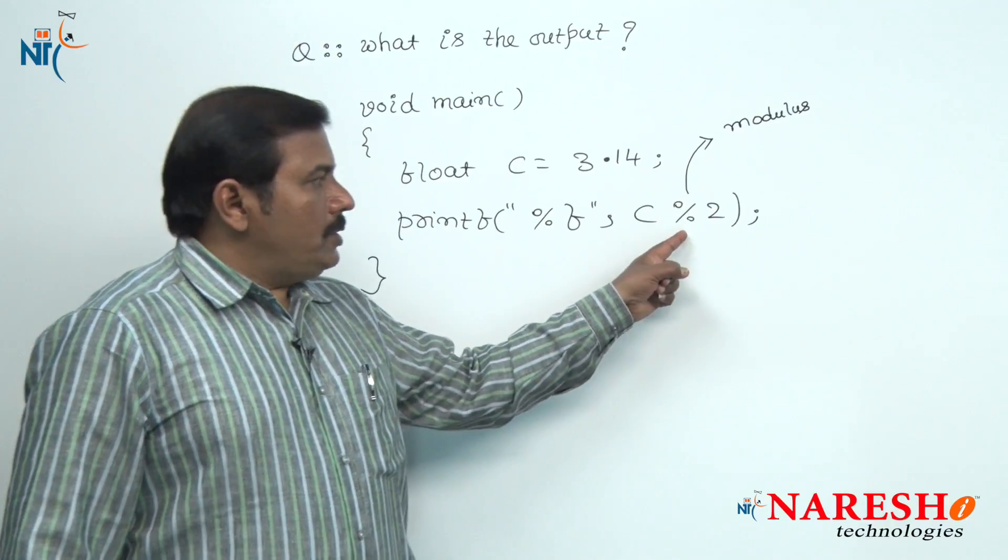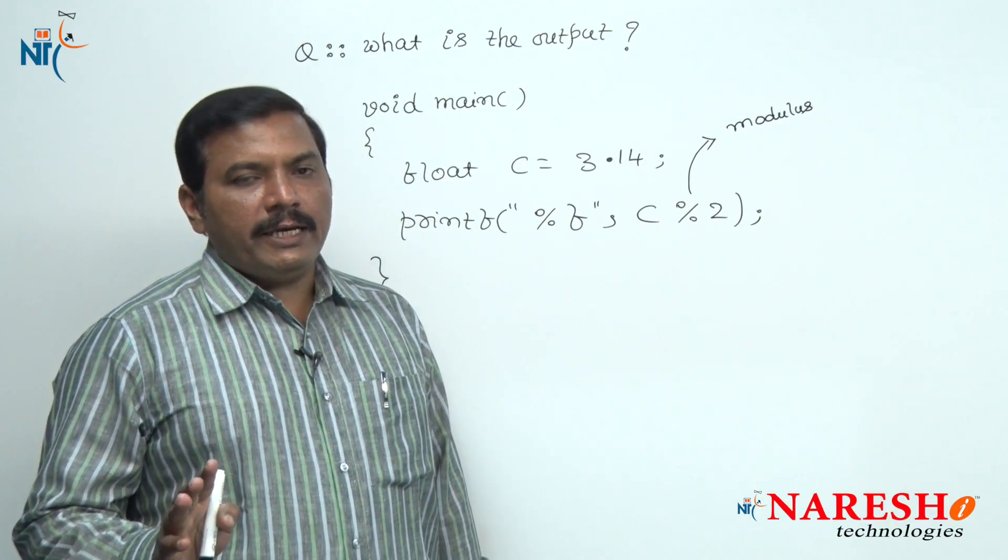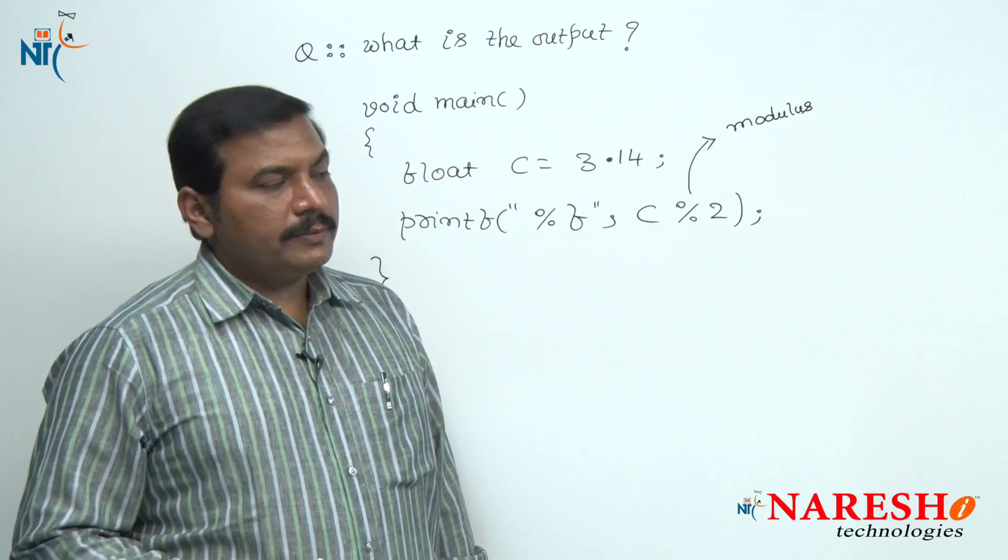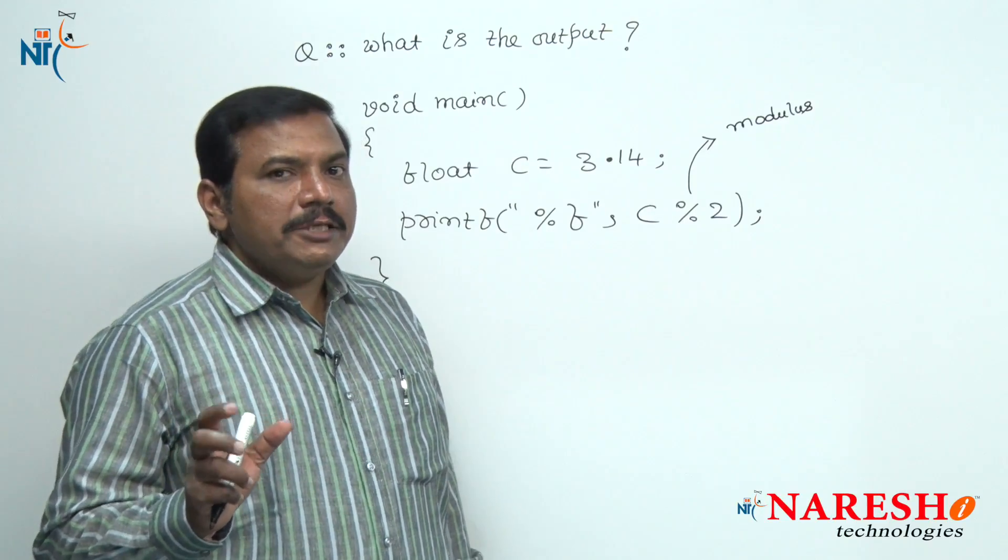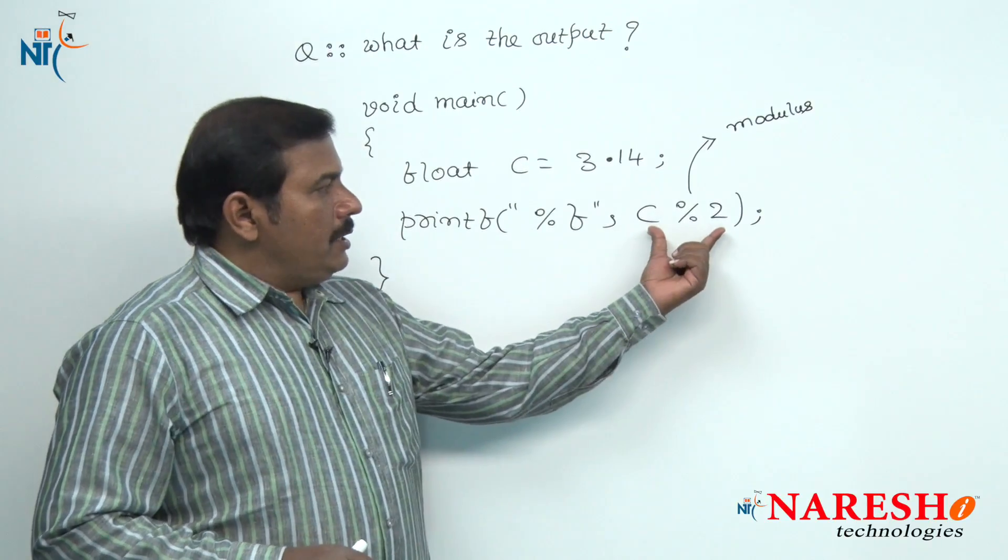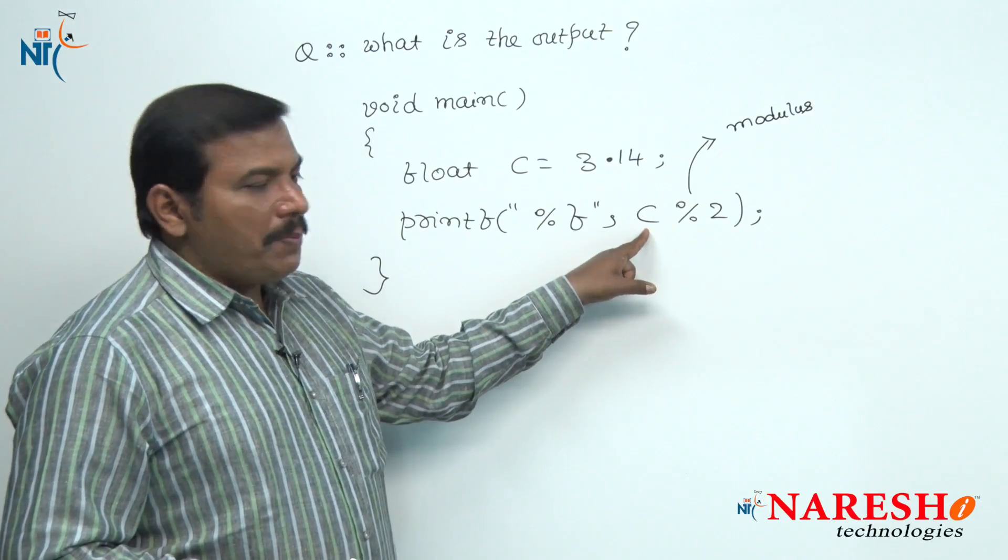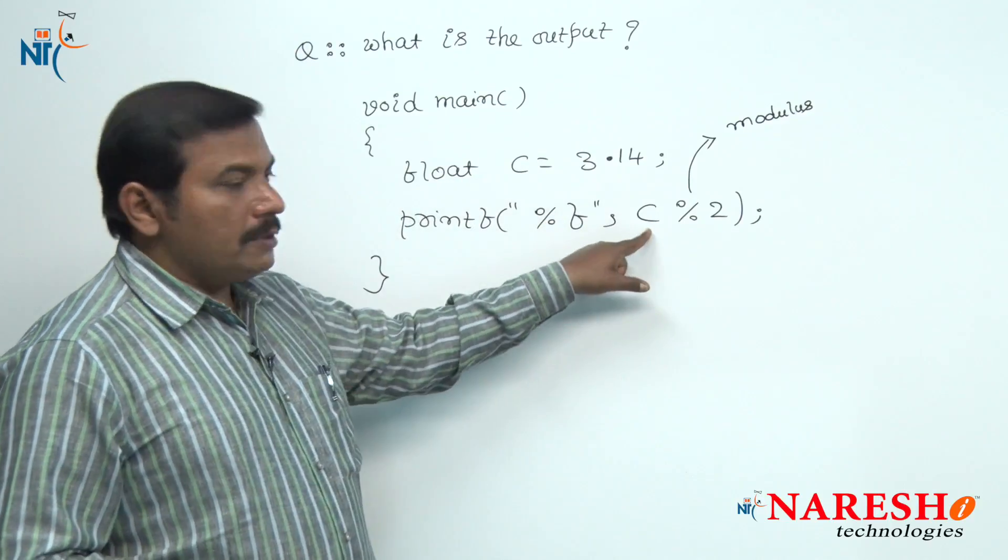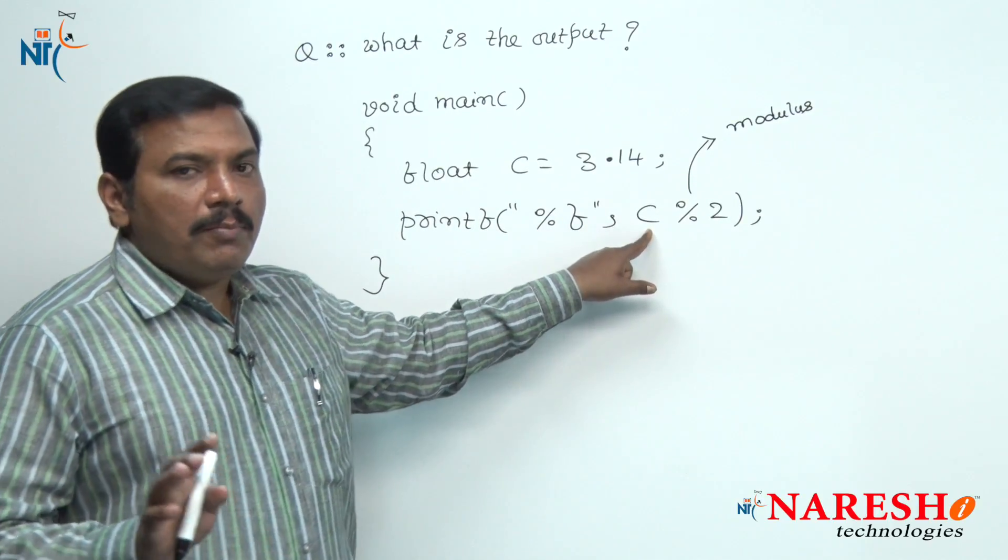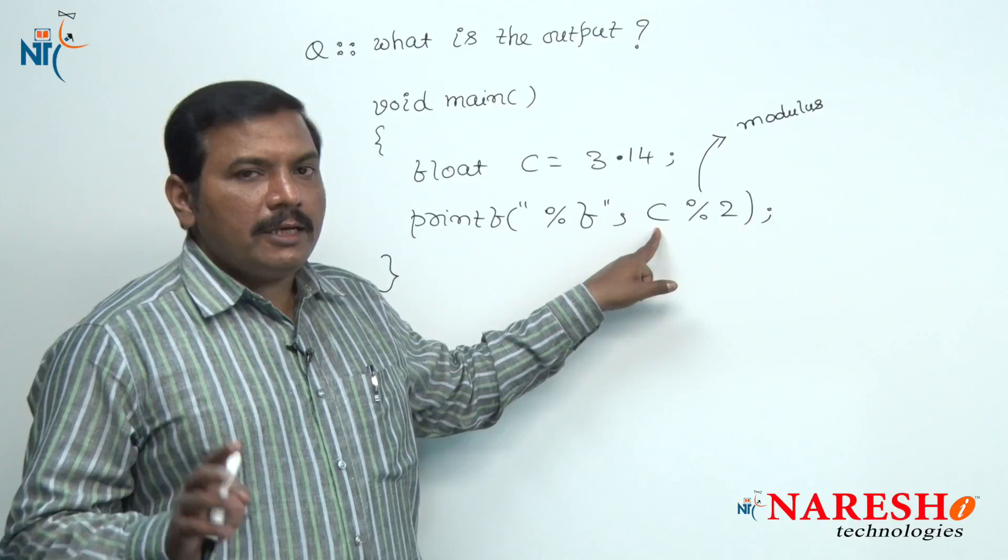The modulus operator is used to obtain remainder after performing integer division. But in this arithmetic expression, the first operand C is of type float. Hence the compiler displays an error message.